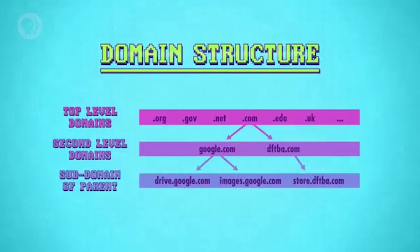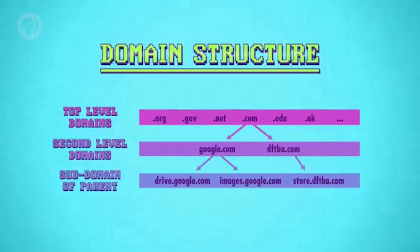This tree is absolutely huge — more than 300 million domain names, and that's just second-level domain names, not all the subdomains. For this reason, the data is distributed across many DNS servers, which are authorities for different parts of the tree.